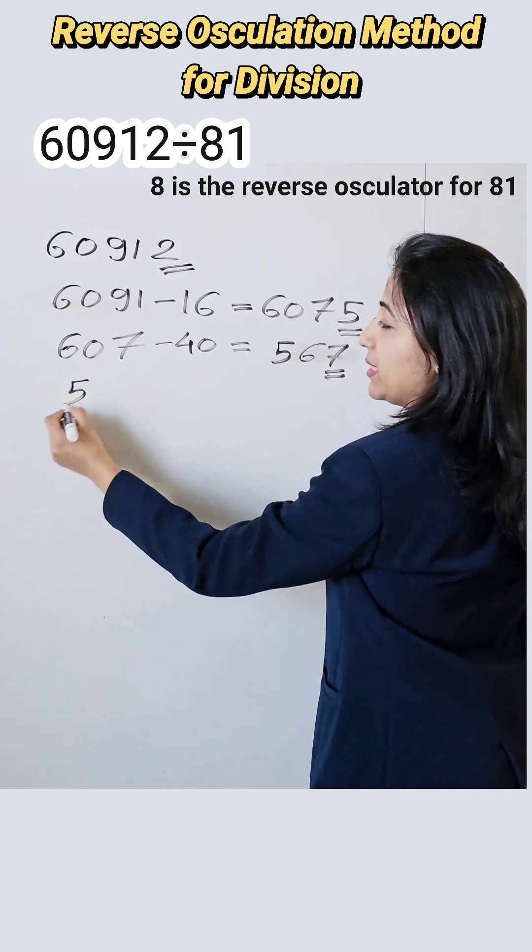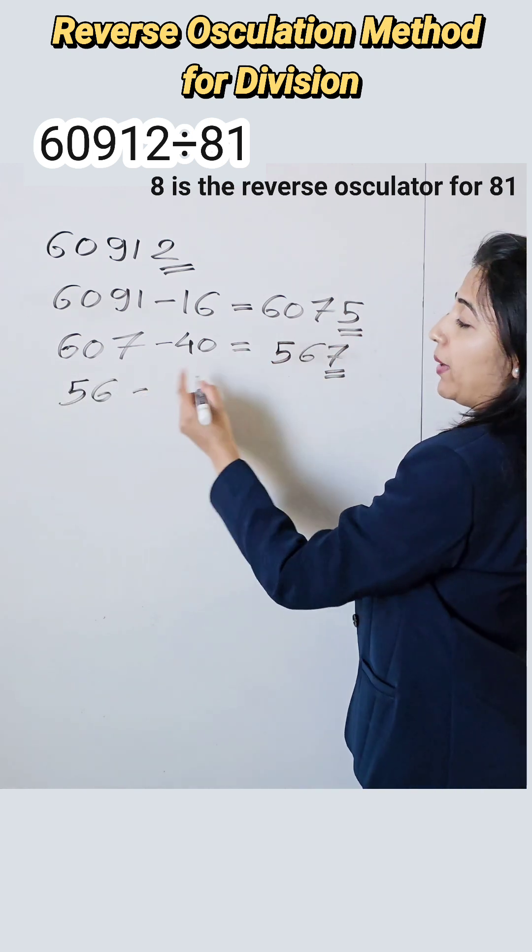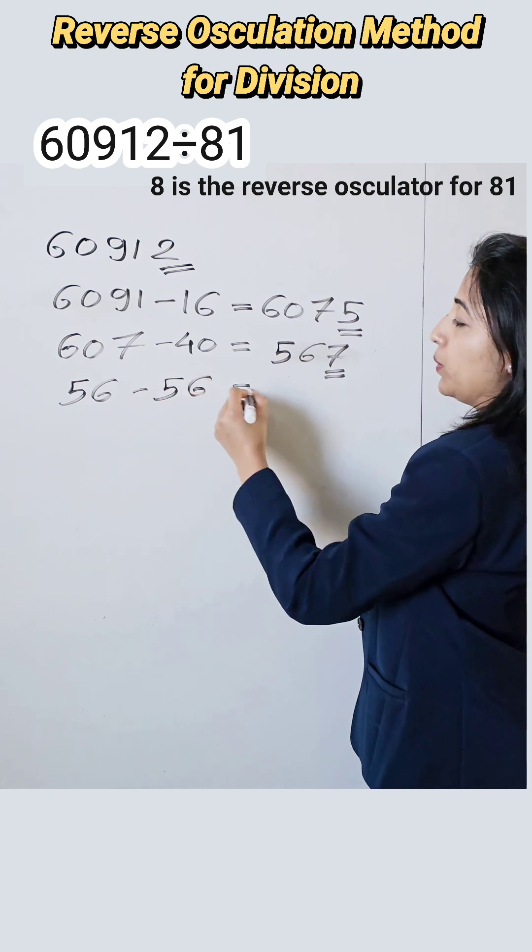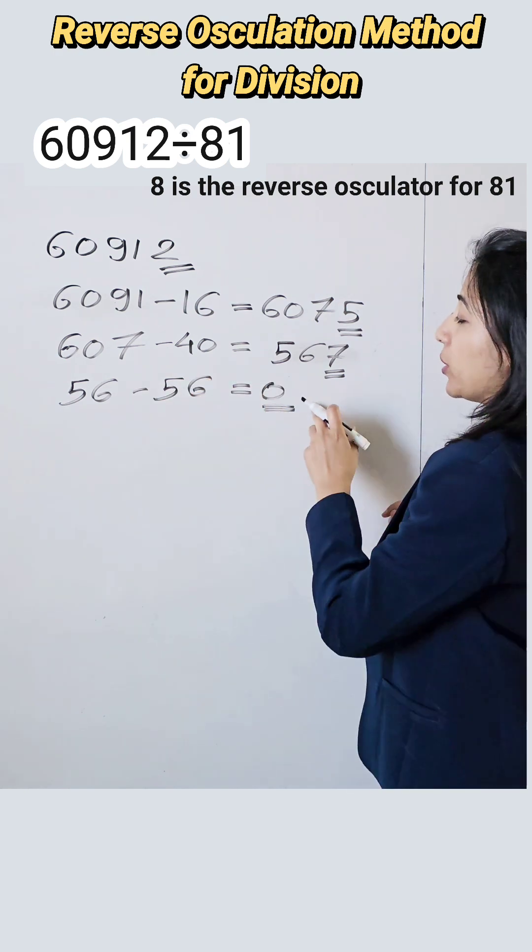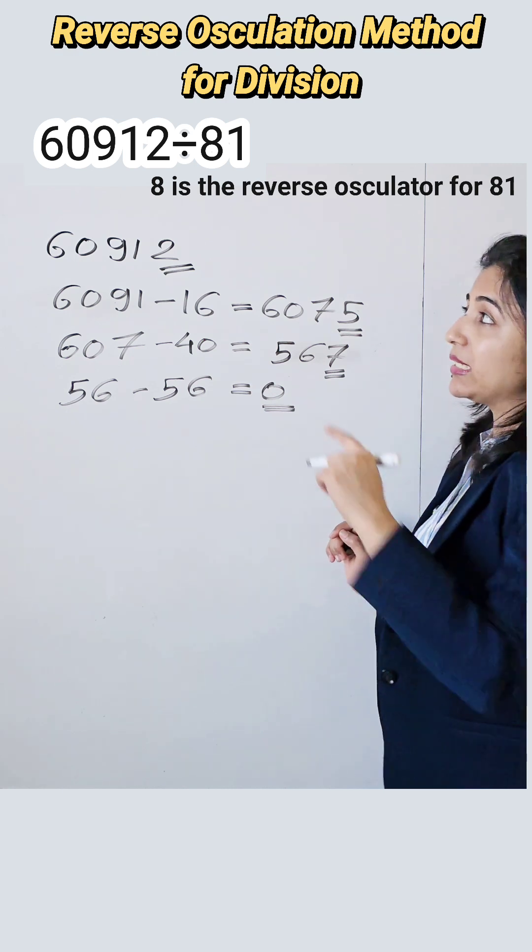Now again repeat the process. So 56, 7 multiplied by 8 is 56. So you will get here 0. So you have to repeat the process until you will get the 0. So here the last number is 0. That means number is divisible by 81.